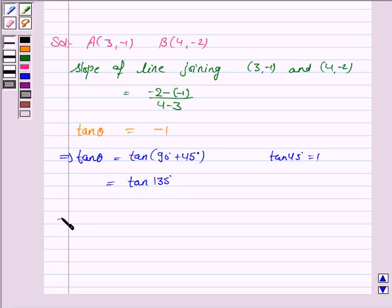So this implies θ equals 135°. Hence, the angle between the line joining these two points and the x-axis is 135°.